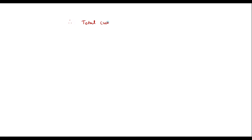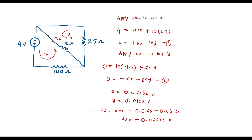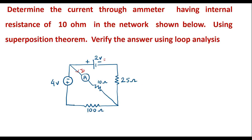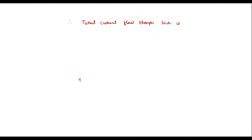Therefore, the total current flowing through the 10 ohm resistor is I equals I1 plus I2.